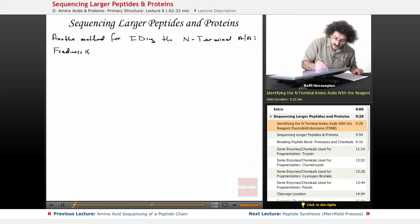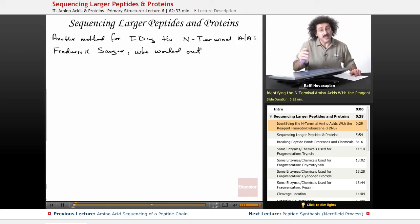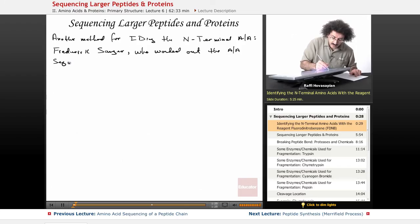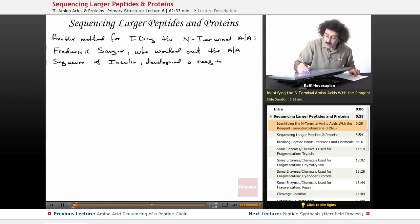Frederick Sanger, who worked out the amino acid sequence of insulin, developed a reagent to identify the N-terminal amino acid. It is called 1-fluoro-2,4-dinitrobenzene.